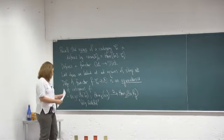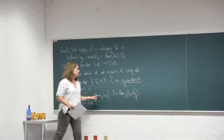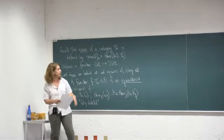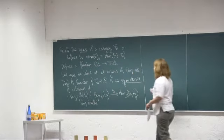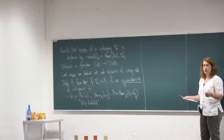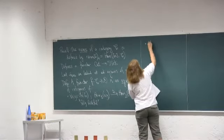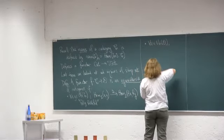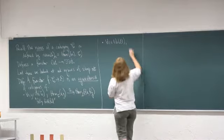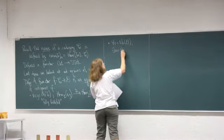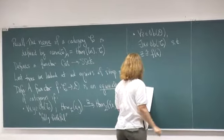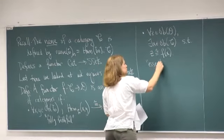Fully faithful can be broken up: full means the map on hom-sets is surjective, and faithful means it is injective. The second condition is about objects: if I take any object Z of D, it doesn't need to actually be in the image of F, but it just has to be in the image up to isomorphism. There needs to exist some object X in C such that Z is isomorphic to F of X. This is called being essentially surjective.